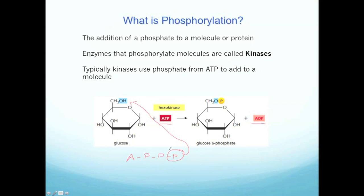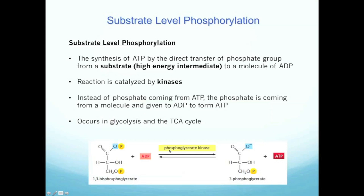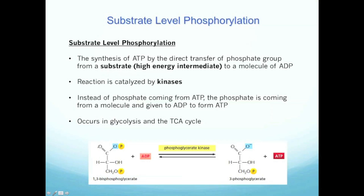So let's look more closely at what substrate level phosphorylation is. This is an event that occurs both in glycolysis and also in the TCA cycle. The definition I really want you to know is that it's the synthesis of ATP by the direct transfer of a phosphate group from a substrate — some molecule that already contains it — to a molecule of ADP.